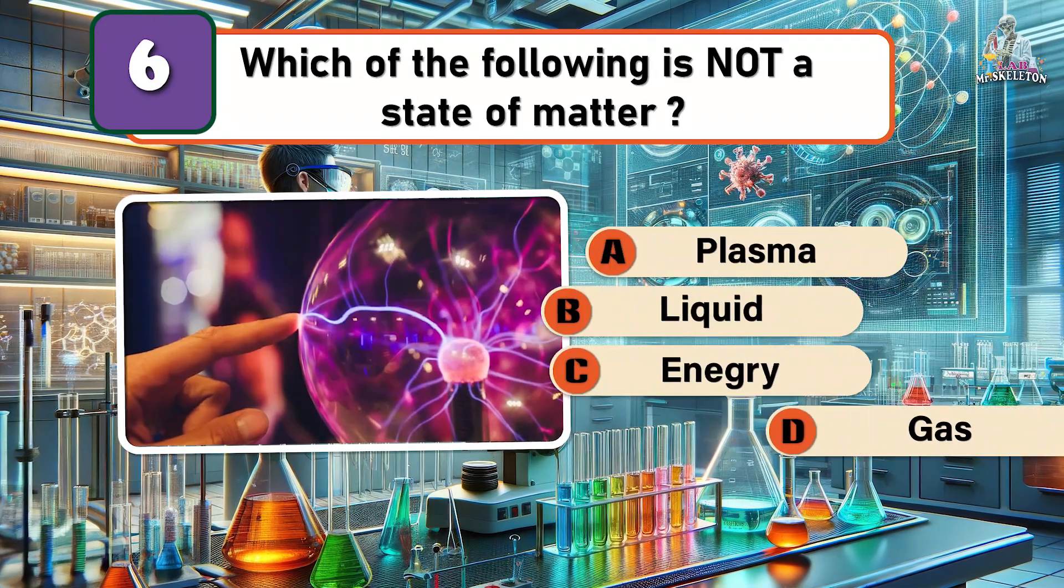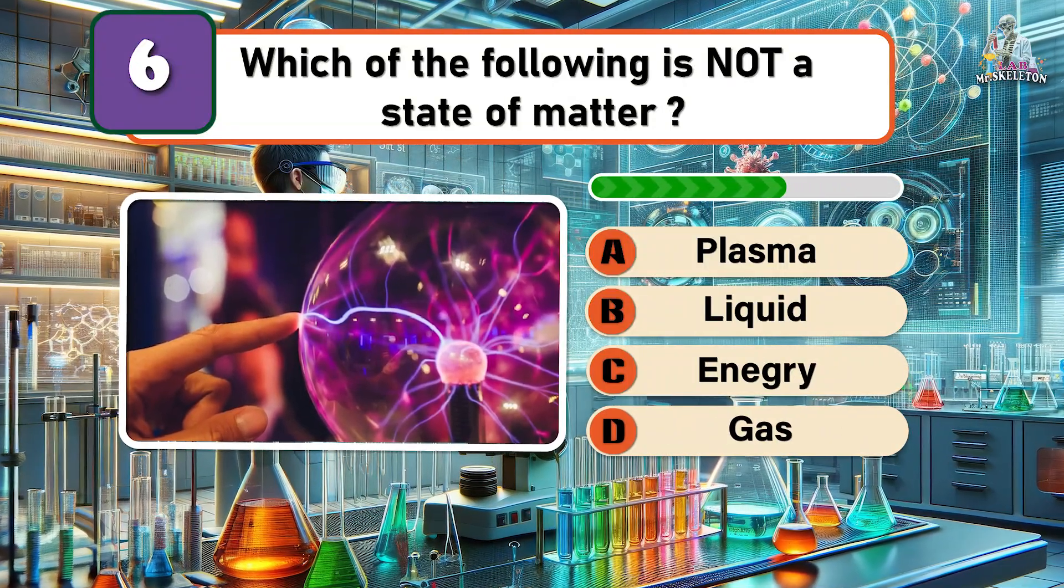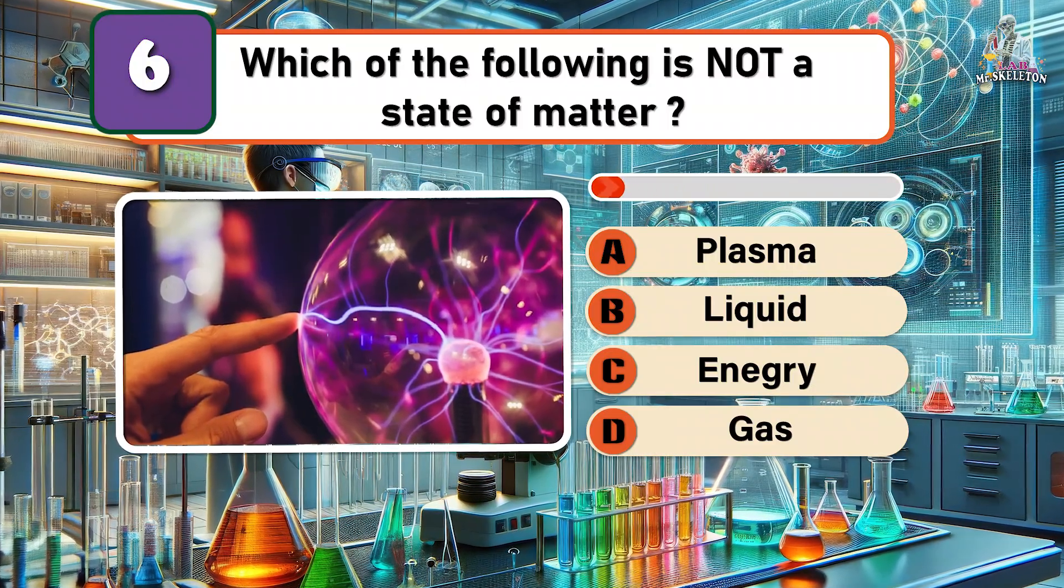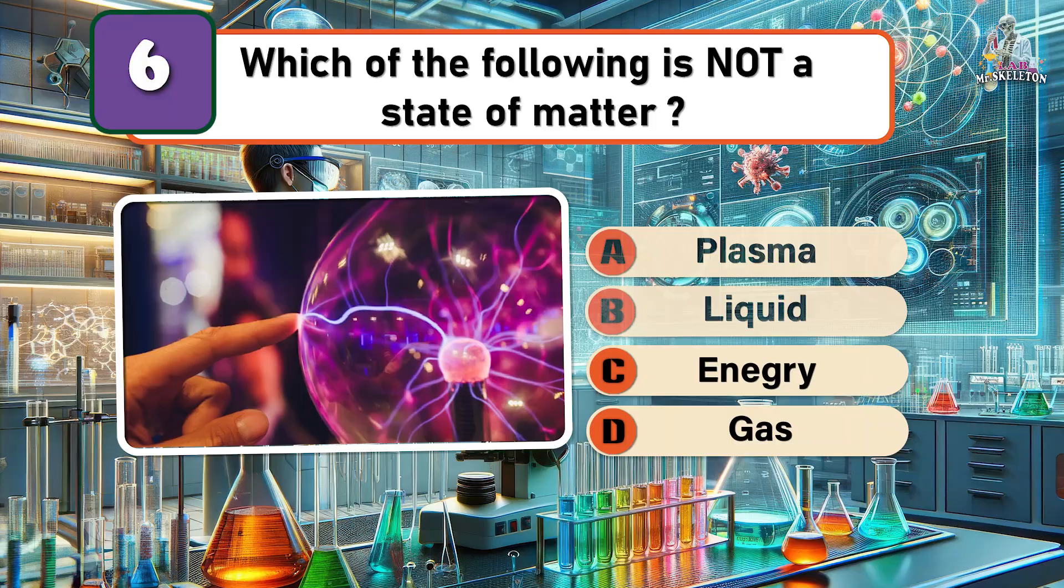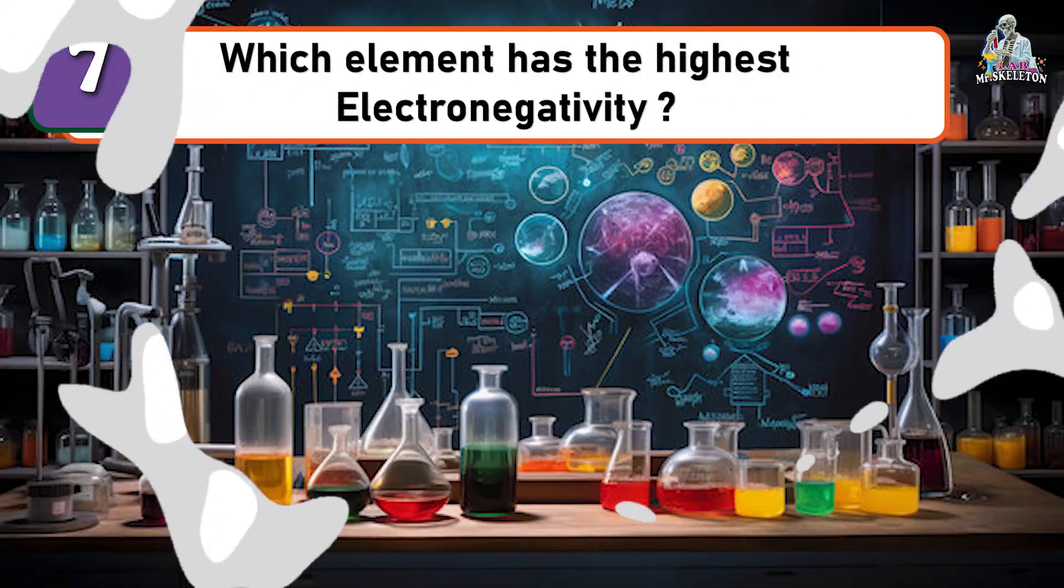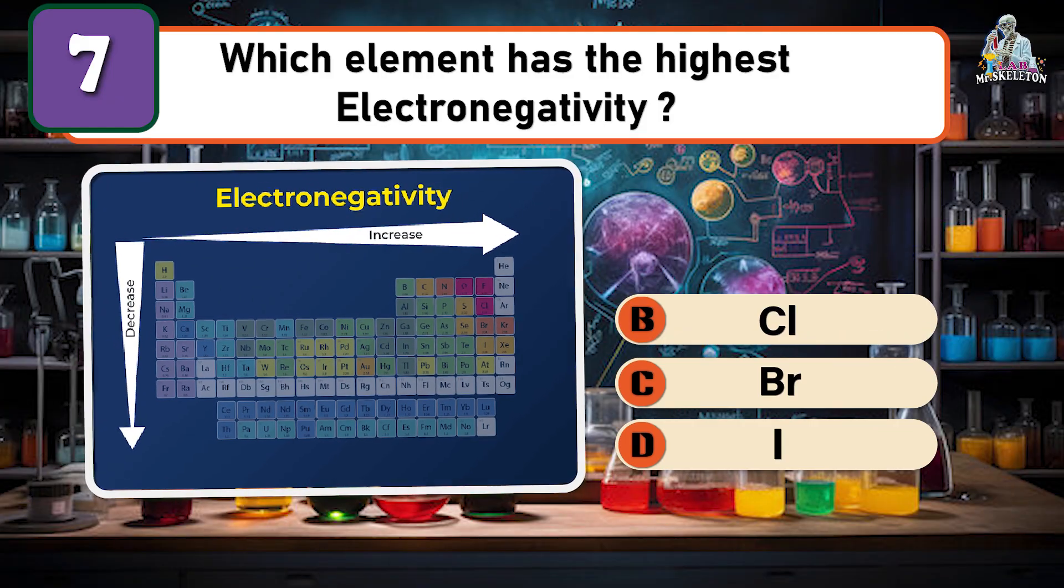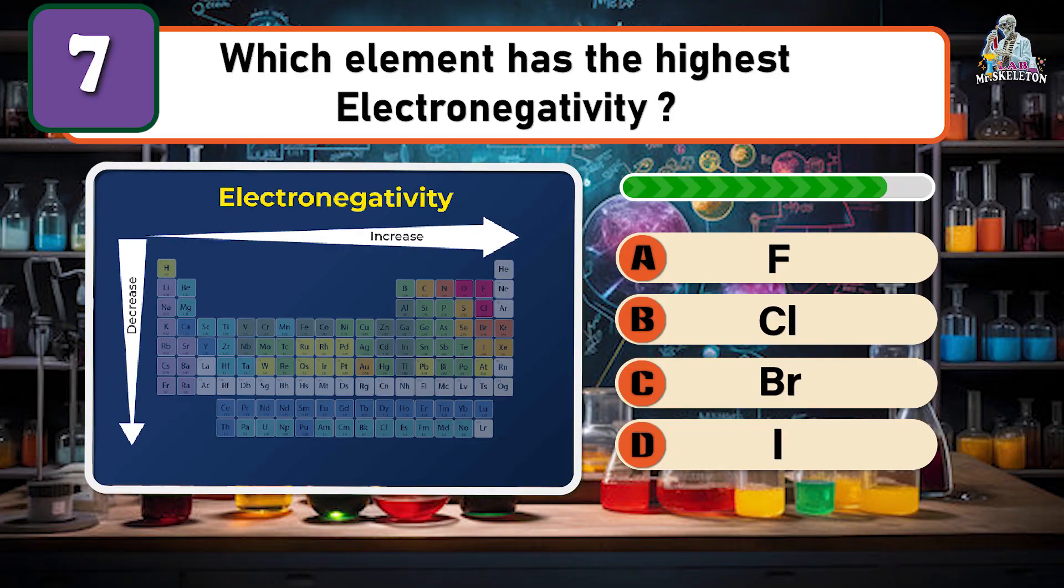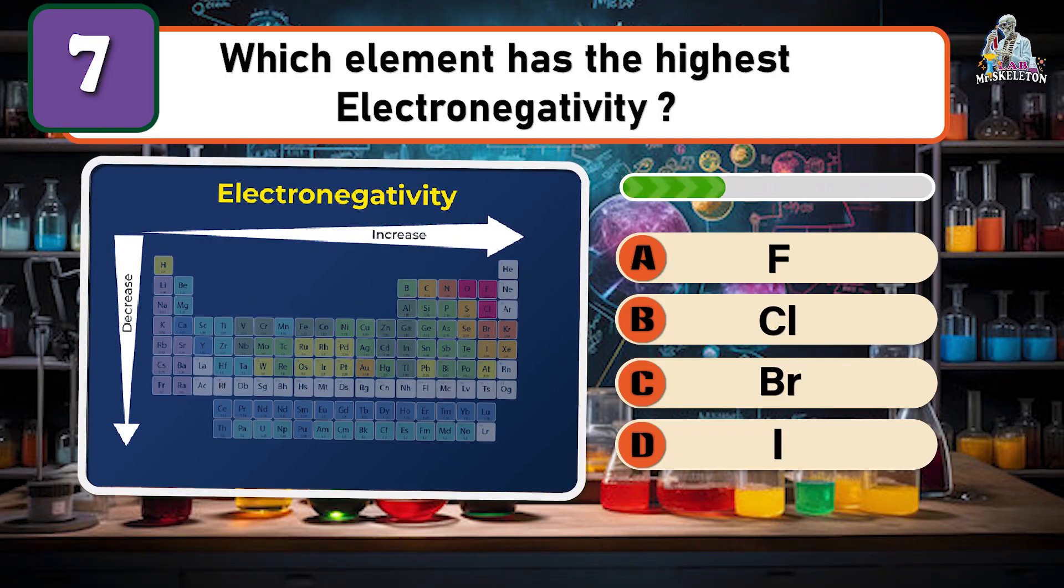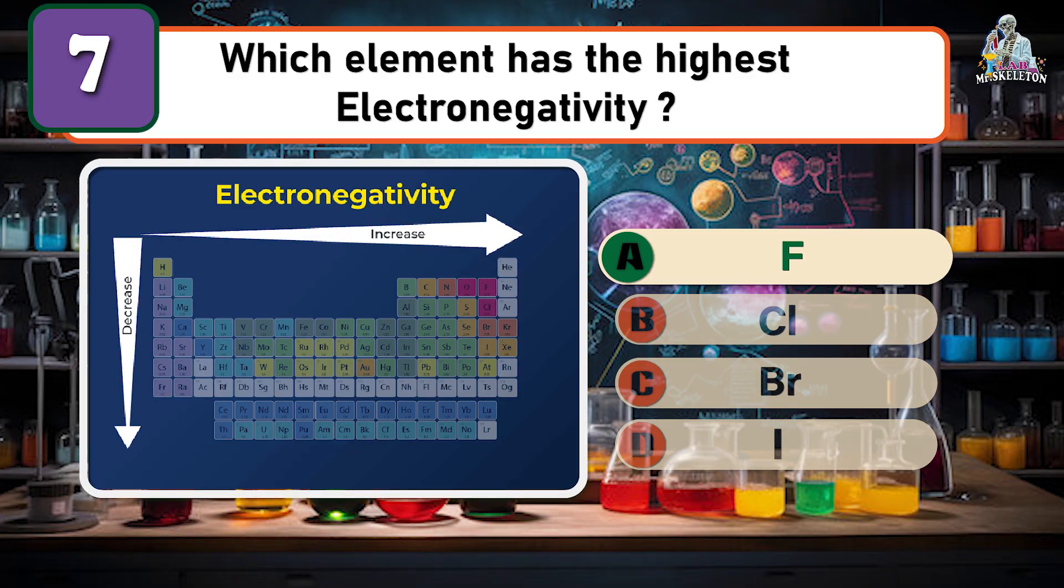Which of the following is not a state of matter? Energy. Which element has the highest electronegativity? Fluorine.